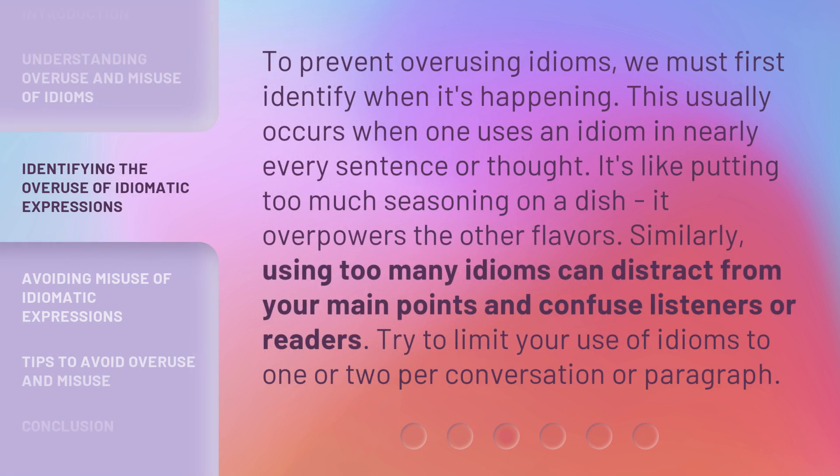To prevent overusing idioms, we must first identify when it's happening. This usually occurs when one uses an idiom in nearly every sentence or thought. It's like putting too much seasoning on a dish — it overpowers the other flavors. Similarly, using too many idioms can distract from your main points and confuse listeners or readers. Try to limit your use of idioms to one or two per conversation or paragraph.